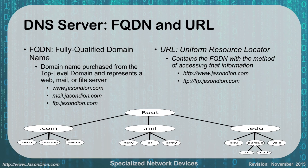A URL, or uniform resource locator, takes the fully qualified domain name and prepends how you're going to access that data. You can go to http://www.jasondion.com for the non-secure public-facing website, or https if you want to access it securely — for example, to process a credit card payment. For about the last 20 years, all browsers by default understand that if you just put in jasondion.com, you really mean http://www.jasondion.com and add that for you. Where it really becomes important is making sure you have the S in https to get to a secure site.